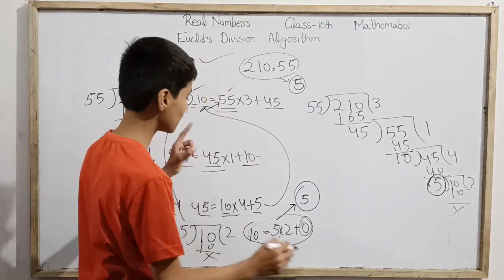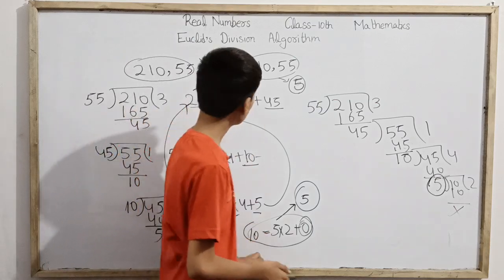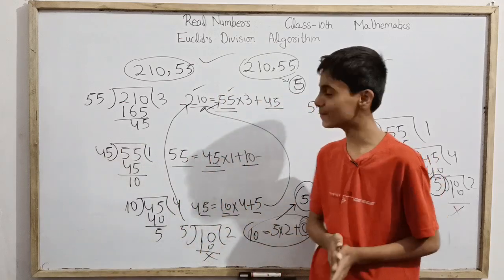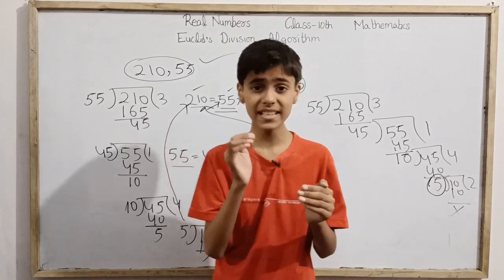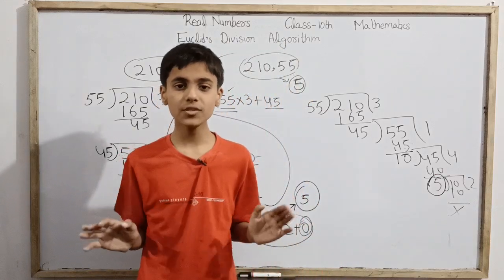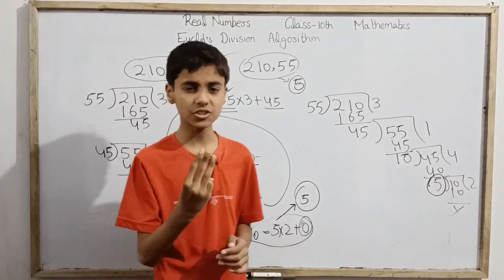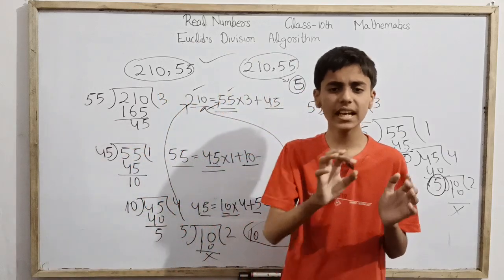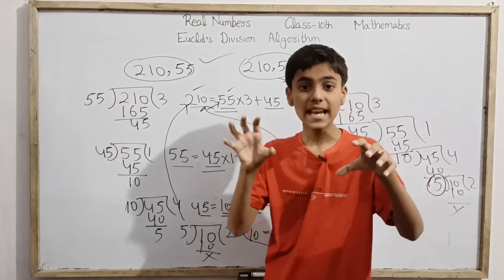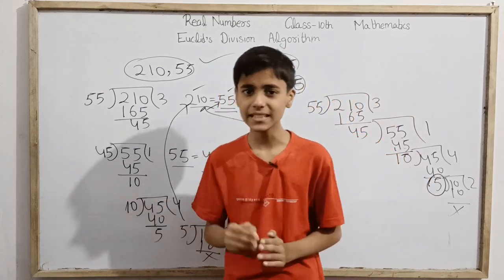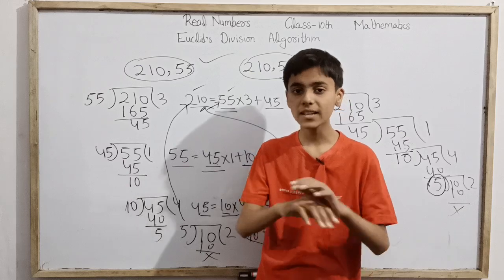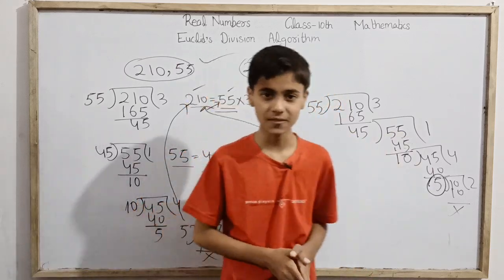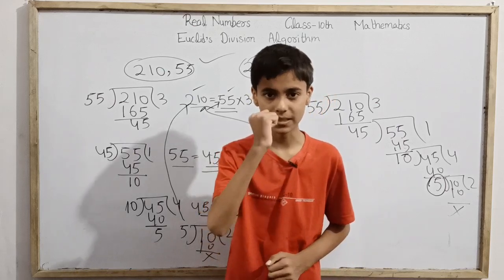This holds for negative numbers as well, but mostly in Class 10 we work with positive integers. If there are three integers, we first find the HCF of two numbers, then find the HCF of that result with the third number. That's all for today about Euclid's Division Algorithm. Thanks to you always, and Jai Hind, Jai Bharat.